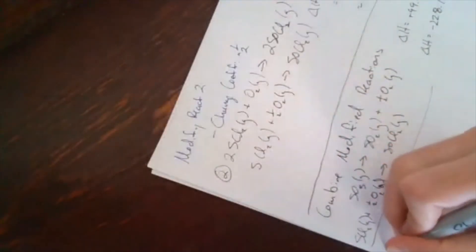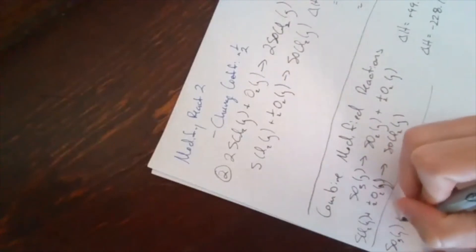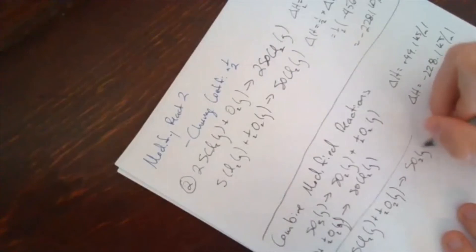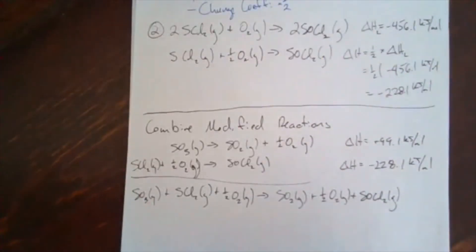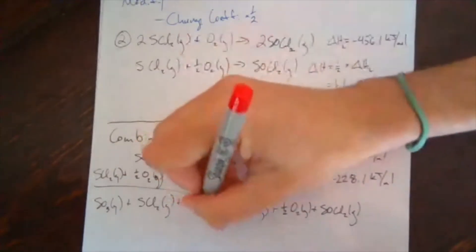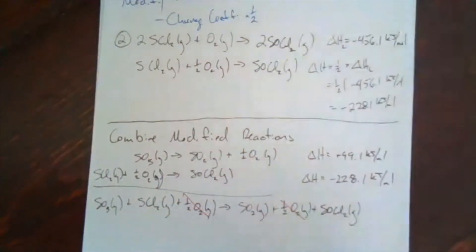And I'm going to add them together. So all of those reactants come together. SO3 gas plus SCl2 gas. All my reactants come together. And then all my products come together. After I combine, I want to simplify. I have O2, O2. Those need to be canceled. Because they're not changing.